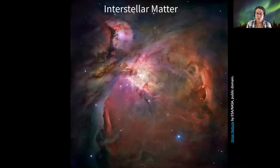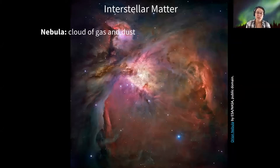So, for example, interstellar matter permeates the space between stars. Nebulae are a really good example. You've probably seen lots of beautiful Hubble images like this. And a nebula is just a cloud of gas and dust in space.